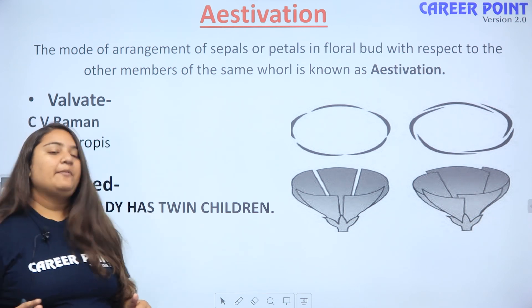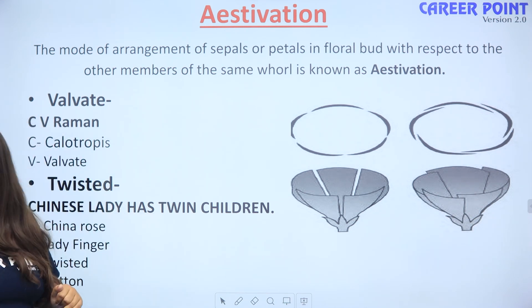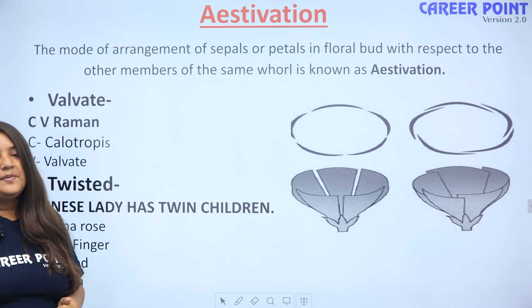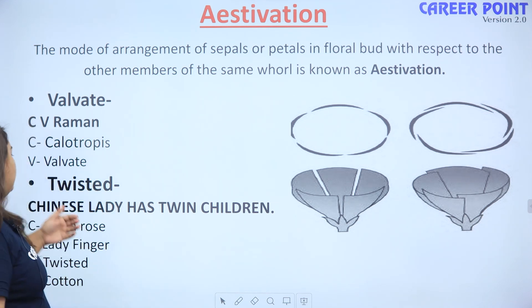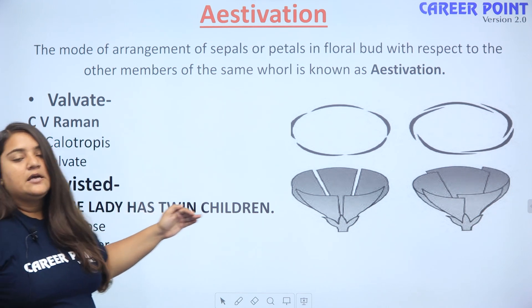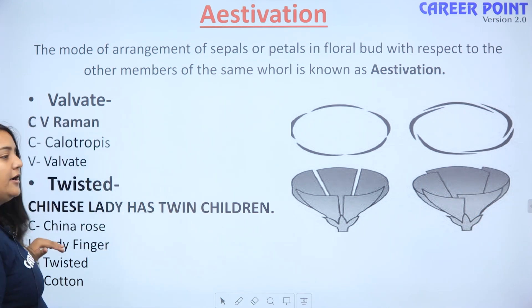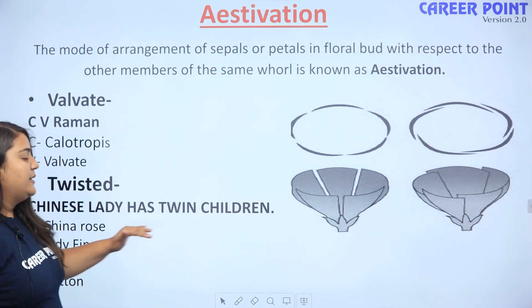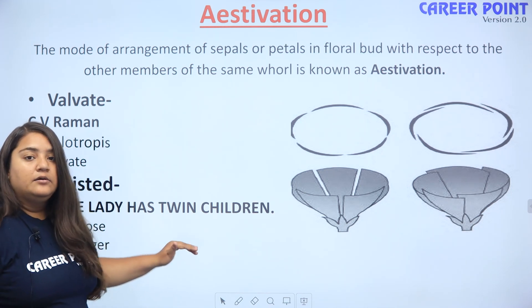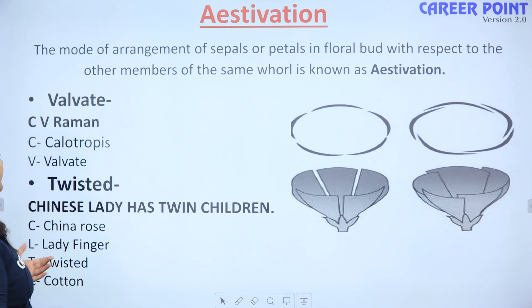Sabko yaad hua? Let us revise. Valvate ka kya tha? CV Raman — C se Calotropis, V se Valvate. Uske baad hamaari trick thi: 'Chinese lady has twin children.' Chinese se China rose, lady se lady finger, twin se twisted, and C se cotton.